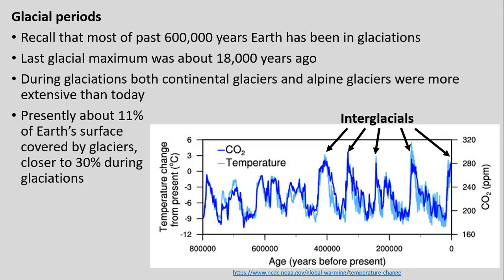We've talked about glacial periods in the past. Actually, a lot of the past 600,000 years, Earth has been in a series of glaciations, with only a few interglacial or warmer periods. Our last glacial maximum was about 18,000 years ago at its maximum extent. Glaciations for both continental and alpine glaciers were much more extensive then — about 30% of Earth's surface, compared to presently only about 10 or 11%.